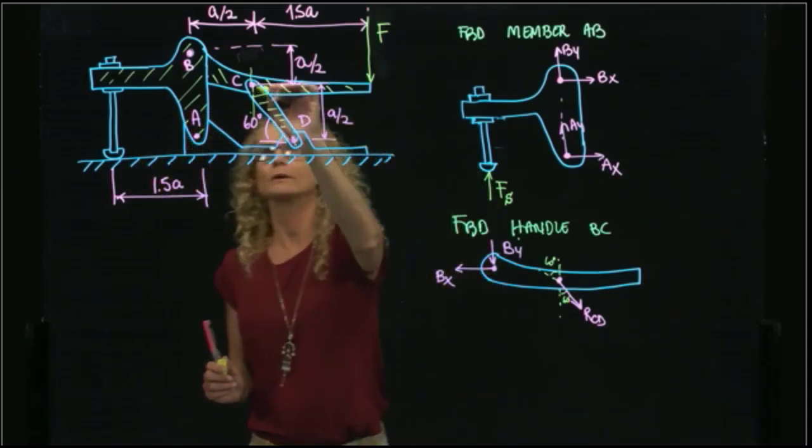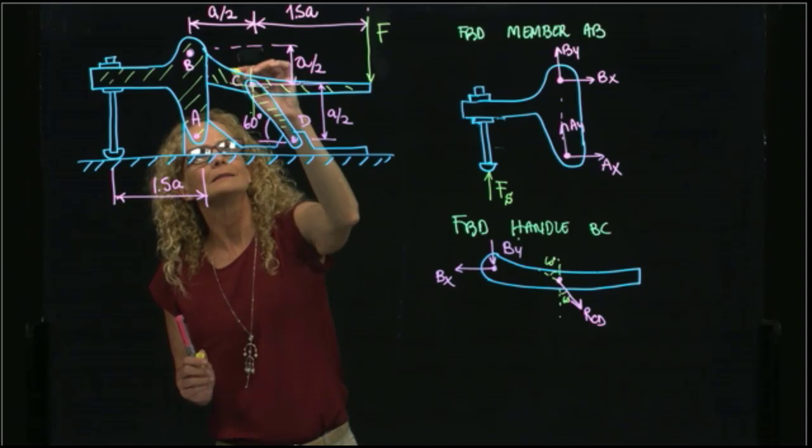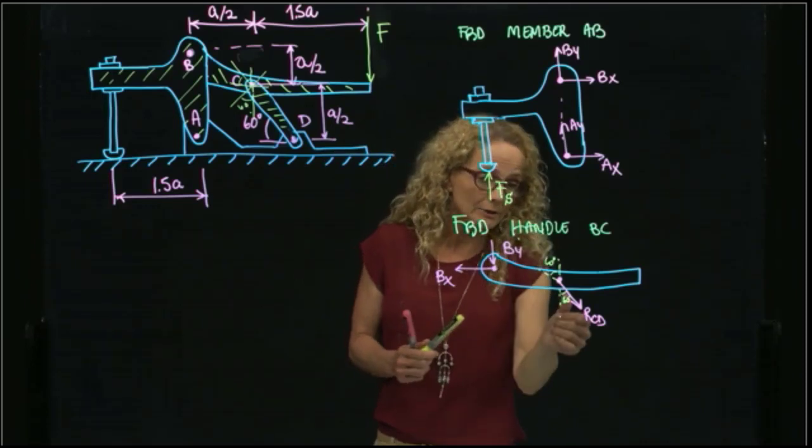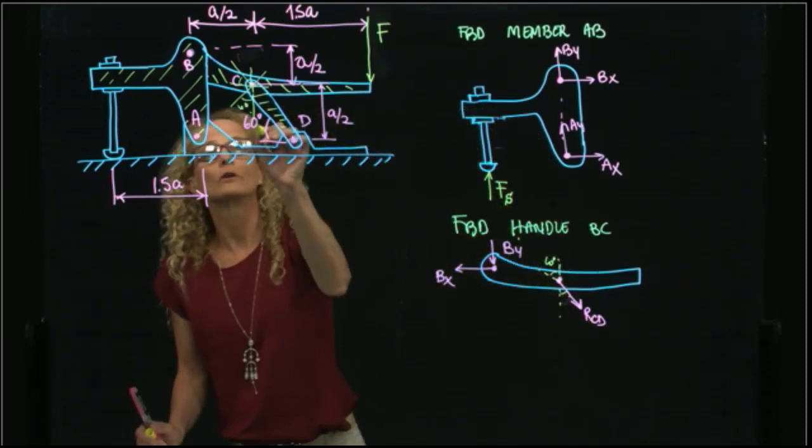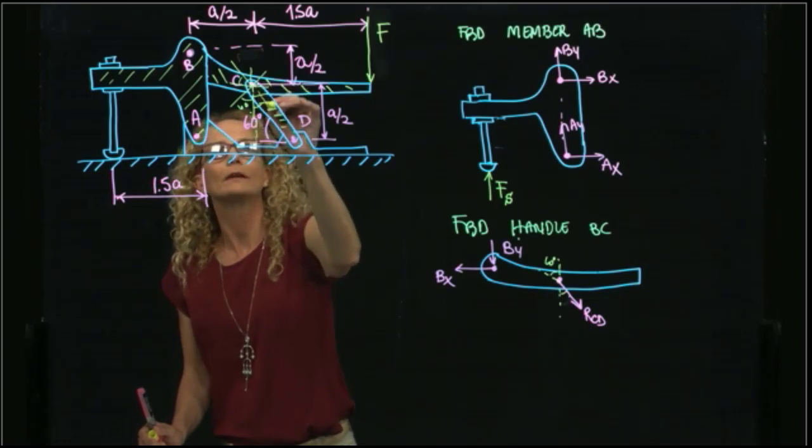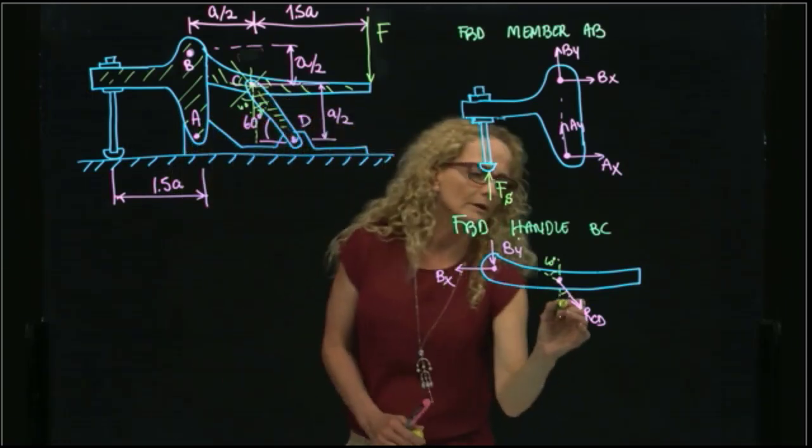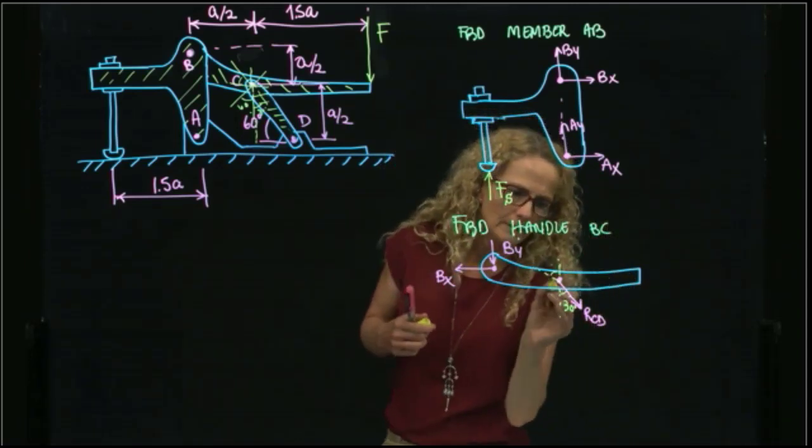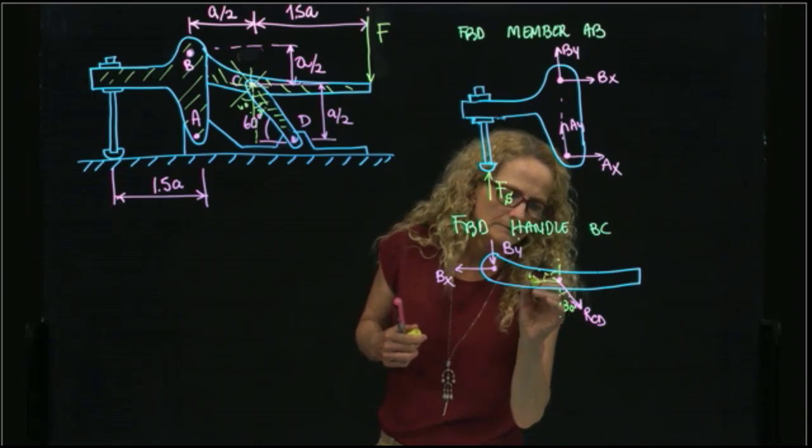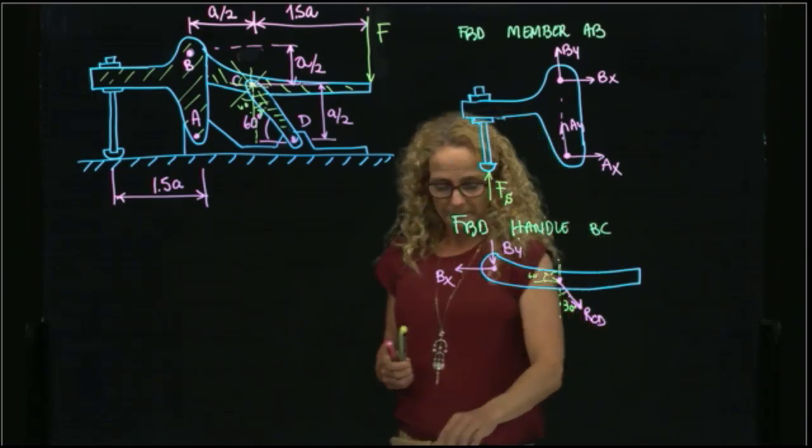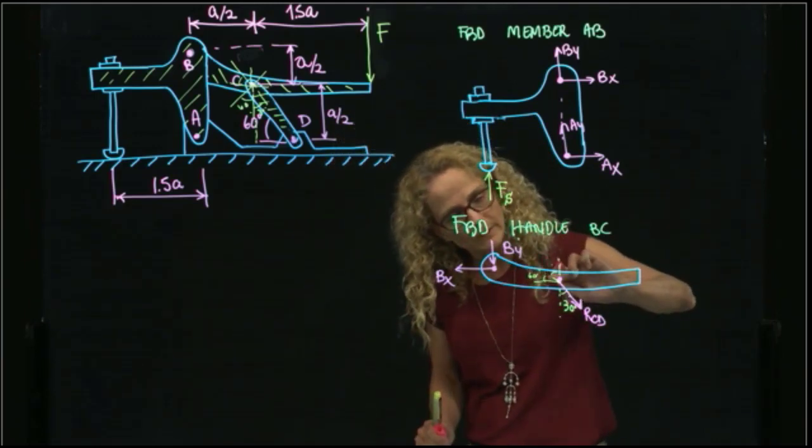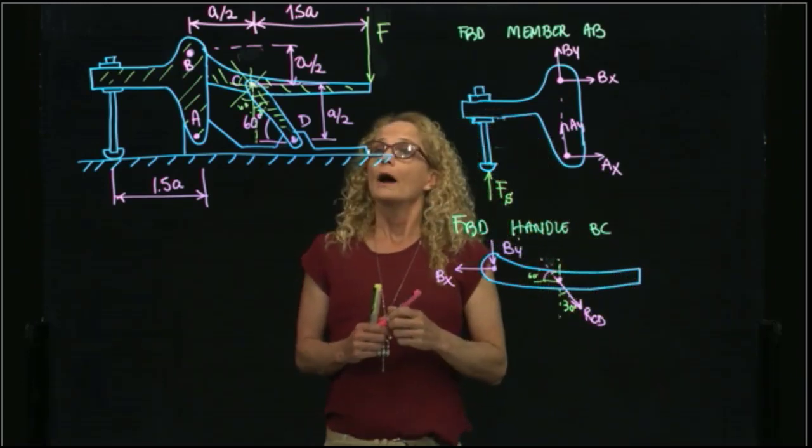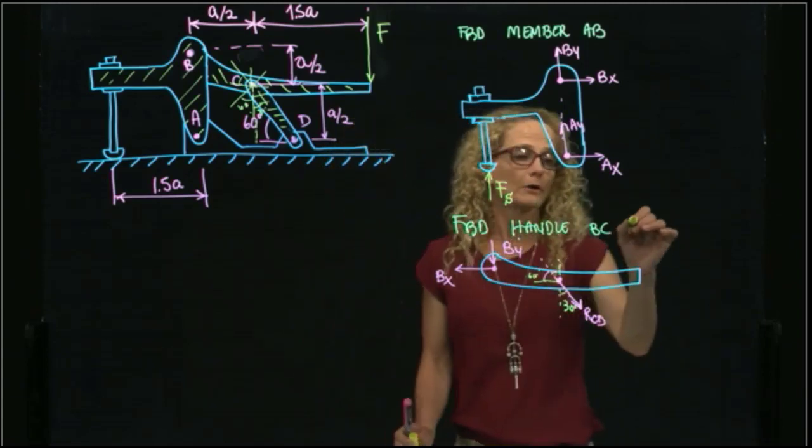Even though it's a pin, I will only draw a reaction that I can call CD. This reaction's direction is known because this angle is 60, therefore this angle is also 60. If I draw my triangle, this angle will be 30. That's the one I'm drawing. This is 30 degrees. And finally, in my handle, I have the applied force.